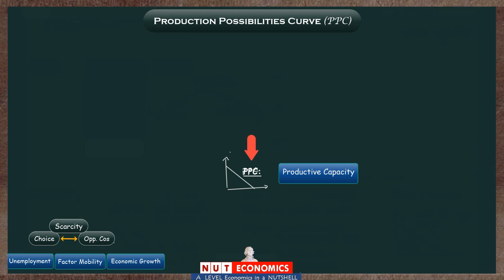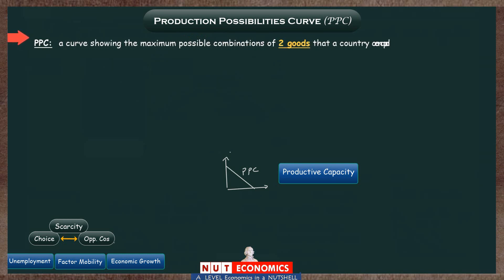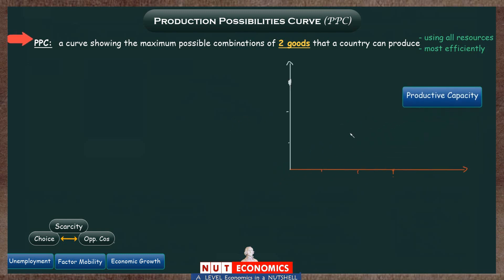This is where the role of assumptions comes in to economics. To make everything very simple, economists assume that this country is only going to be able to produce just two goods — any two goods, but just two goods. Then the PPC says it is the curve that can show you the maximum possible combinations of these two goods that a country can produce, given it uses all of its resources in the best, most efficient way — that is, there is no wastage. This assumption makes it easy to show the productive capacity on a two-dimensional graph, with one good on the y-axis and the other on the x-axis.